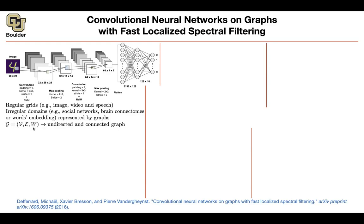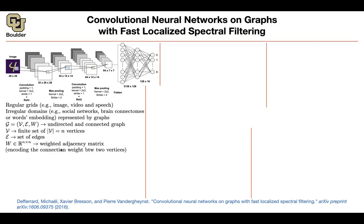You have your nodes, edges, and adjacency matrix. You have n nodes, edges, and your adjacency matrix. You can convert an image into a graph. Let's say you want to do a 3x3 convolution — that's your kernel size. So you have 9 pixels in that window. The pixel in the middle is looking at 8 other pixels, so it's connected to 8 other pixels. You can have an 8-nearest-neighbor graph for your 2D images.